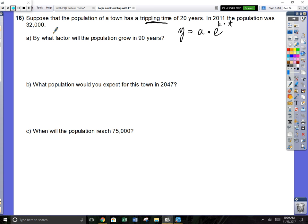Population of a town has a tripling time of 20 years. We know that every 20 years population is going to triple. They tell us in 2011 the population was 32,000. You need, before you do anything, I need k. k is the rate, the yearly rate, every year. If you know that it's going to triple in 20 years, how much would it increase by one year? That's what k is. k is the rate, the yearly rate.